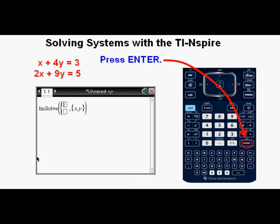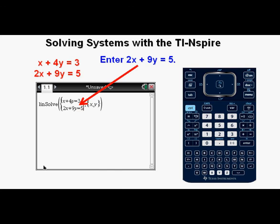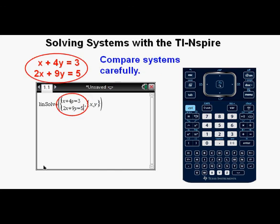This is where we will enter our equations. Enter the first equation, x plus 4y equals 3, on the top line. Press tab to get to the next line of equations. Now enter the second equation, 2x plus 9y equals 5. Compare the systems carefully to be certain you entered the equations properly. Press enter.